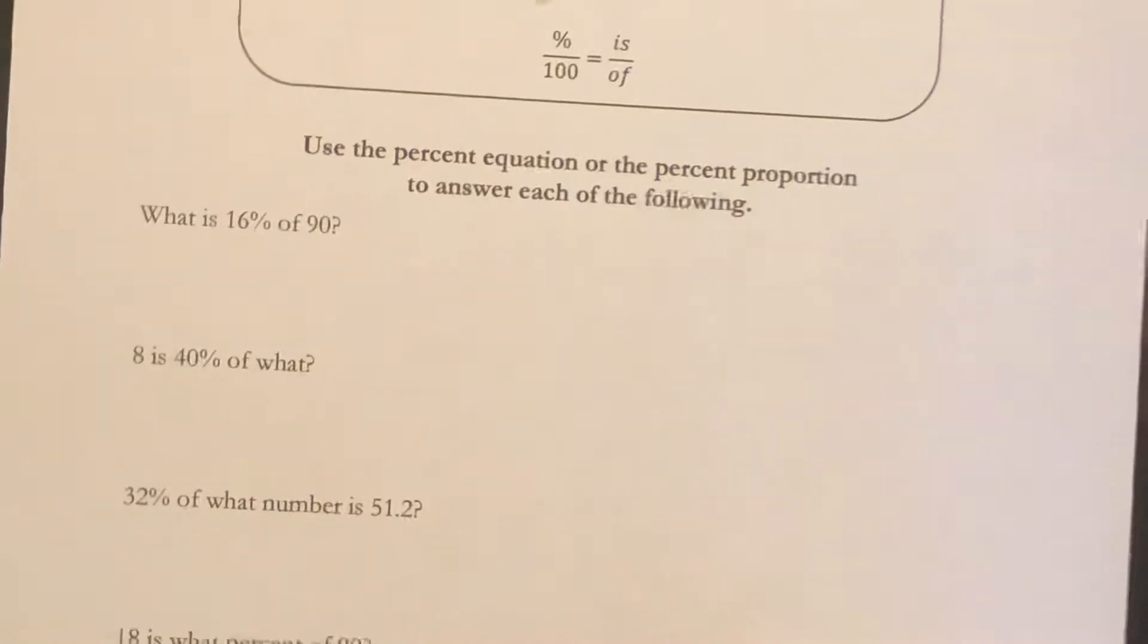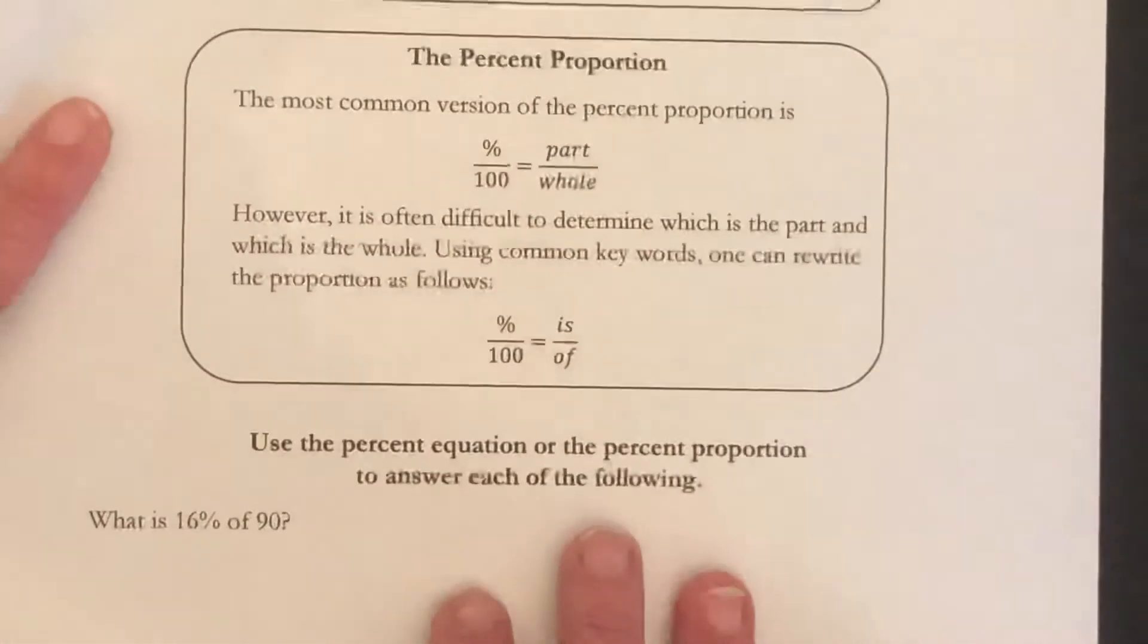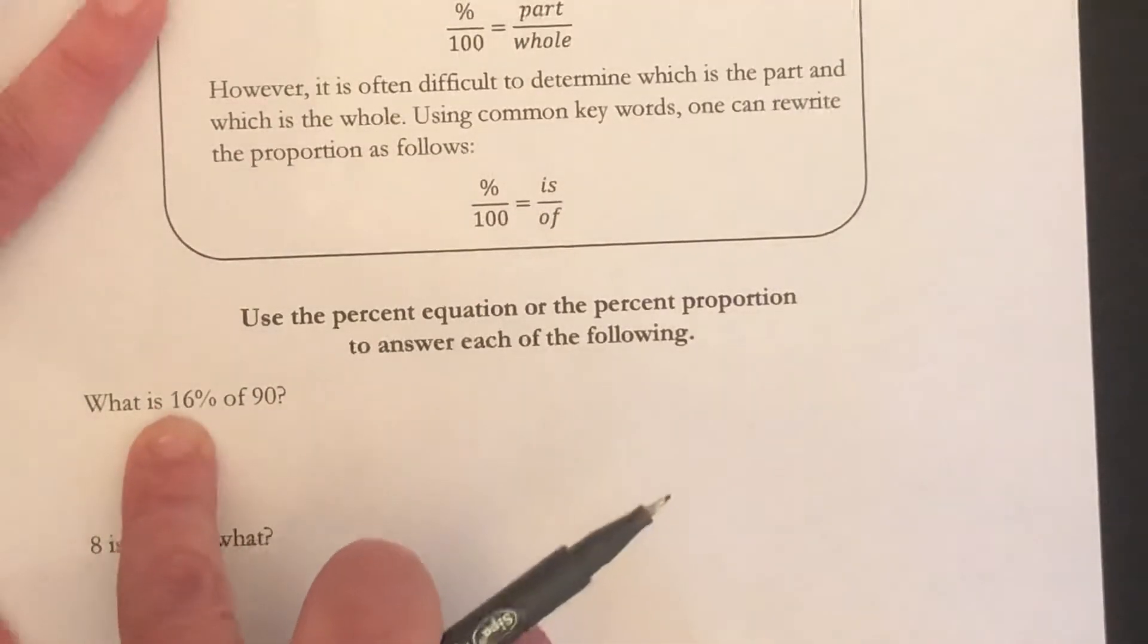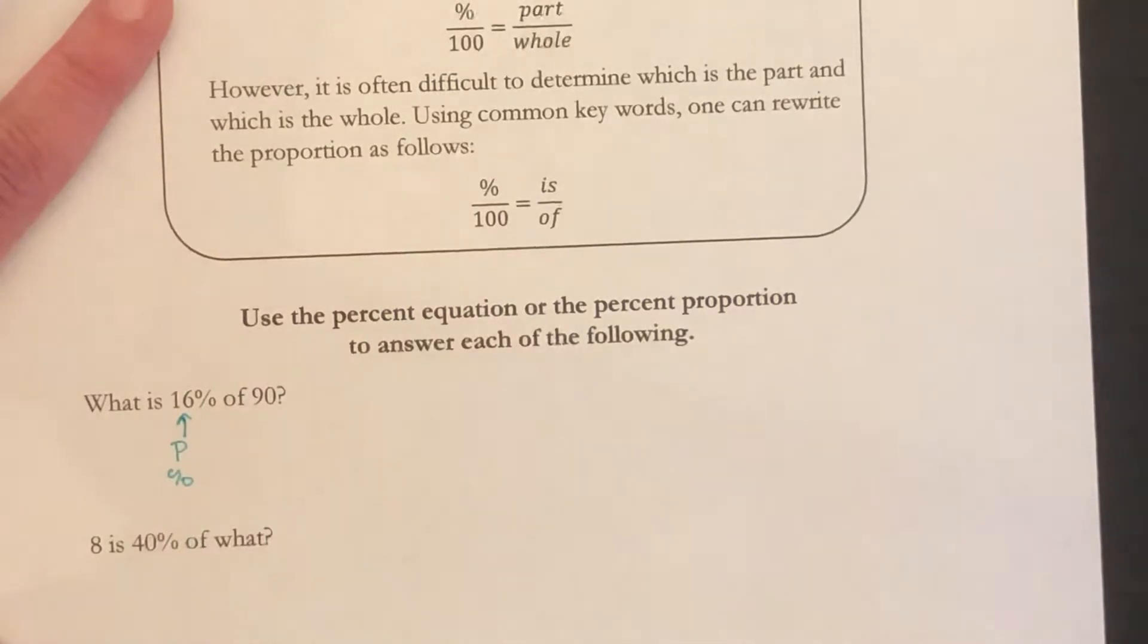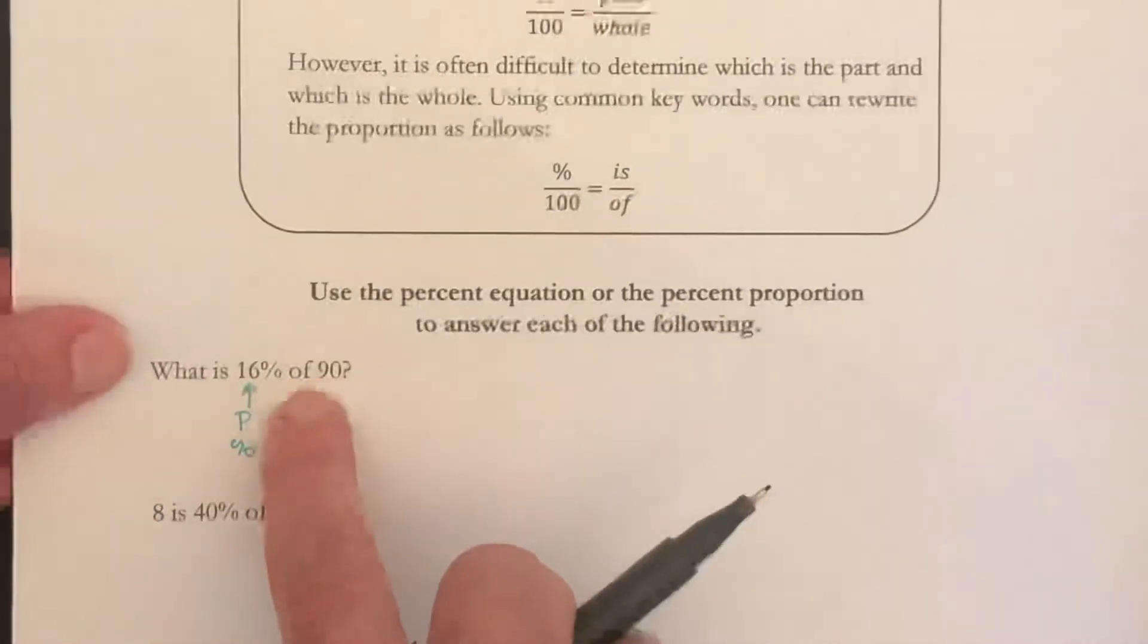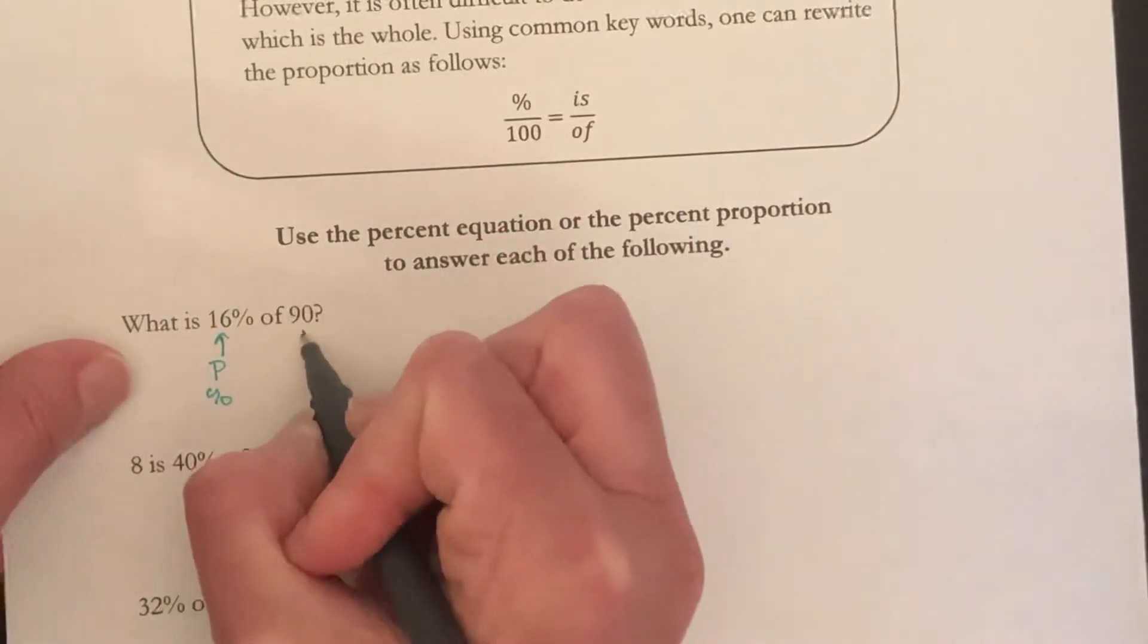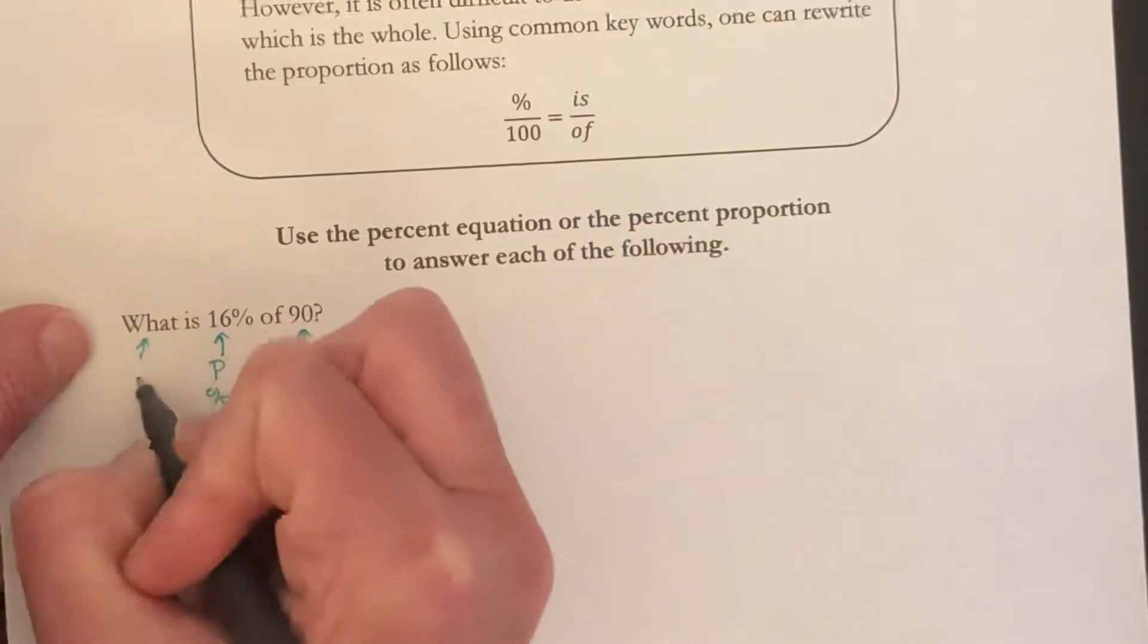So what is 16% of 90? First of all, we're going to figure out which pieces we have. We have the percent. We're given P equal to 16, so that's our P or the percentage, depending on which one we're going to use. What is P percent of B? Notice the word of. So B is going to be this, and we are looking for A.